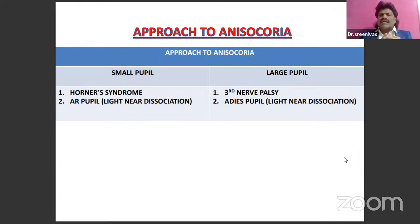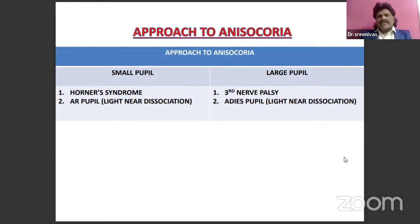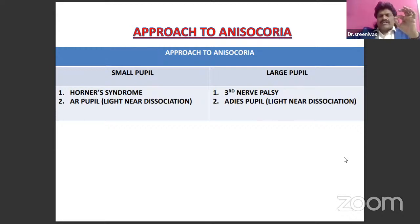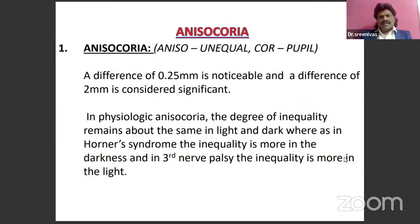Summary of small pupil causes: Horner's syndrome and Argyll-Robertson pupil. Pontine hemorrhage causes bilaterally pinpoint pupils because the single basilar artery affects both sympathetic pathways. Large pupil causes: third nerve palsy and Adie's pupil — both can cause light-near dissociation. In Argyll-Robertson pupil, the pre-tectal nucleus is affected; light reflex pathway goes there but accommodation reflex does not — hence light reflex absent, accommodation present. In Adie's pupil, lesion is in the ciliary ganglion; accommodation fibers recover faster than light reflex fibers. Argyll-Robertson is a small pupil; Adie's is a large pupil.